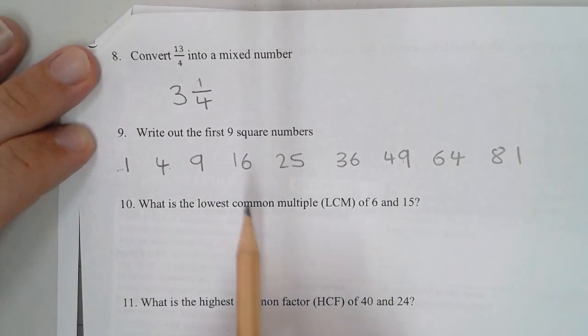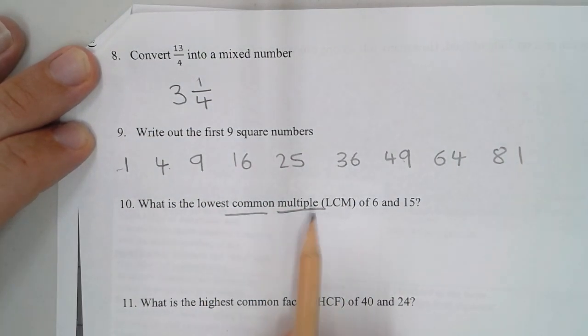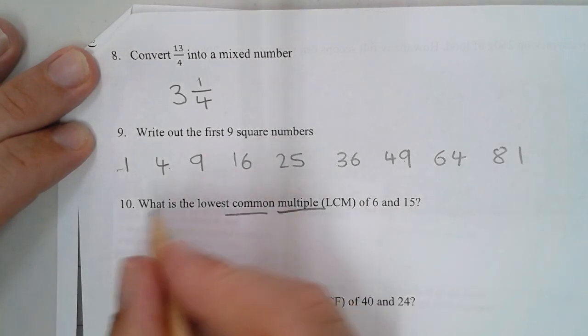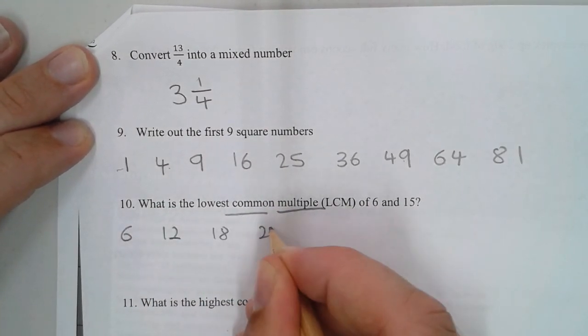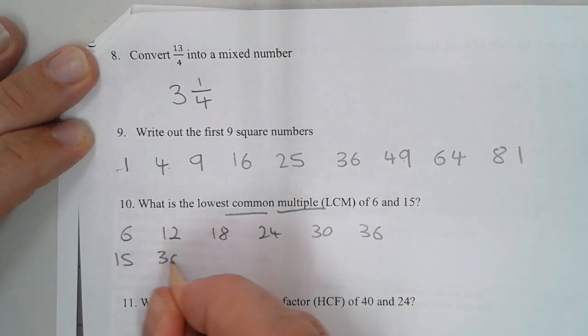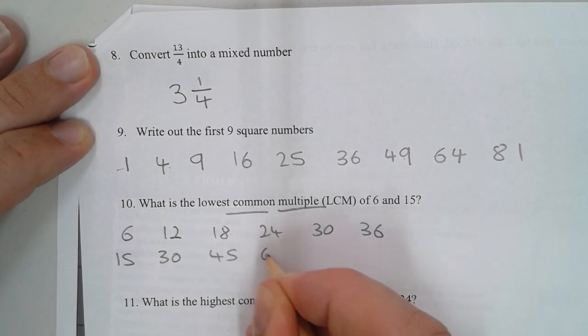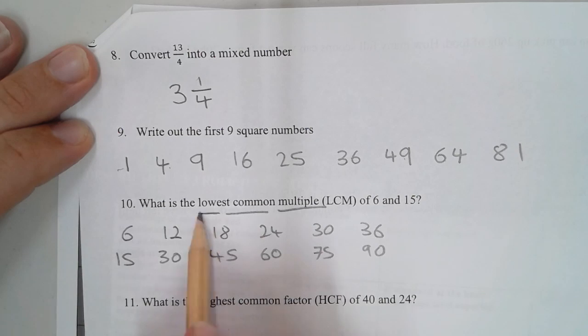What is the lowest common multiple? We're going to write out the multiples of 6 and the multiples of 15. So 6, 12, 18, 24, 30, 36. The multiples of 15: 15, 30, 45, 60, 75, 90. We're going to look for the lowest one that's in both lists. It's 30.